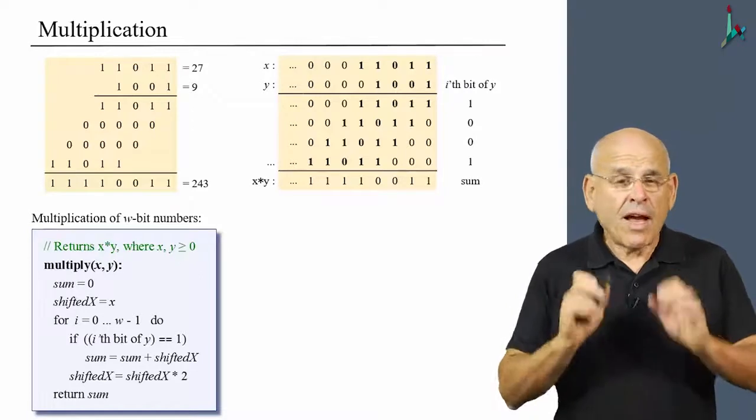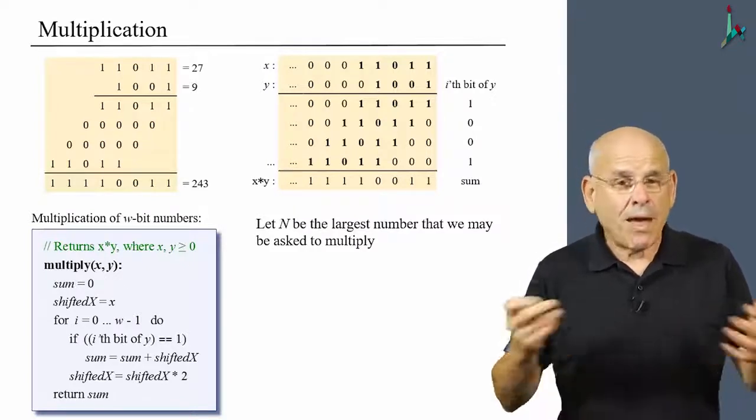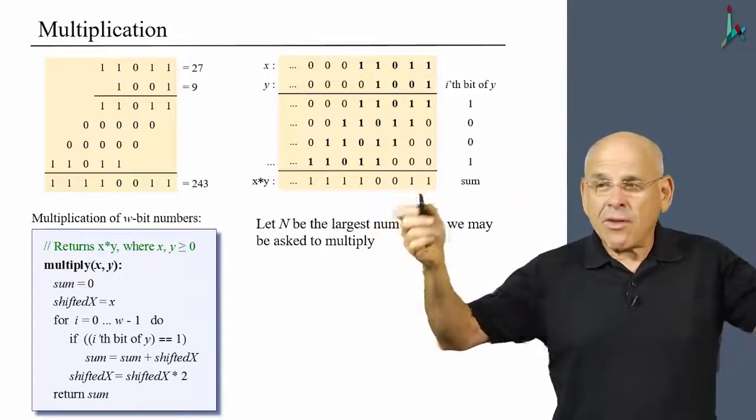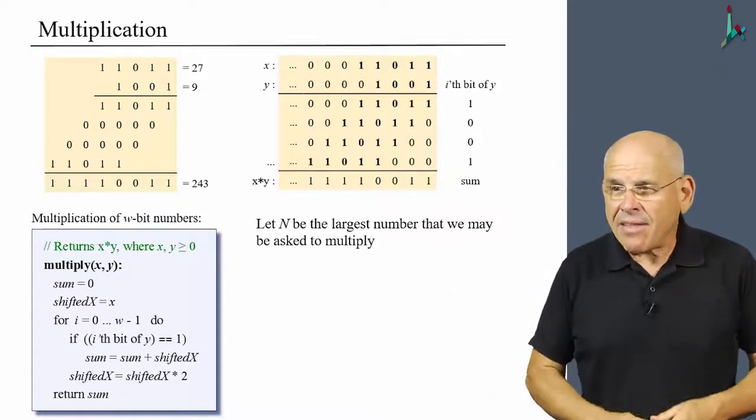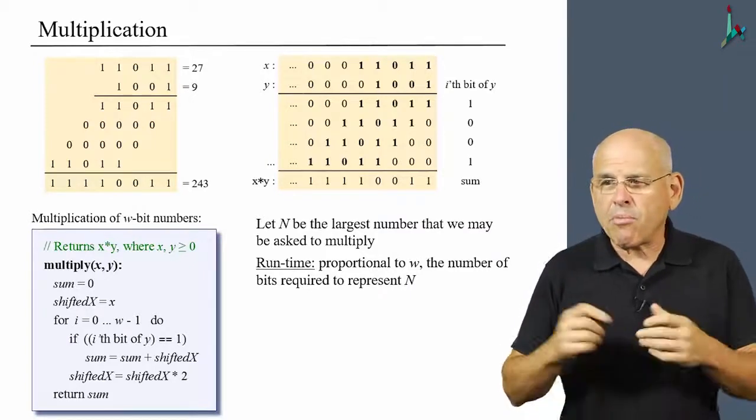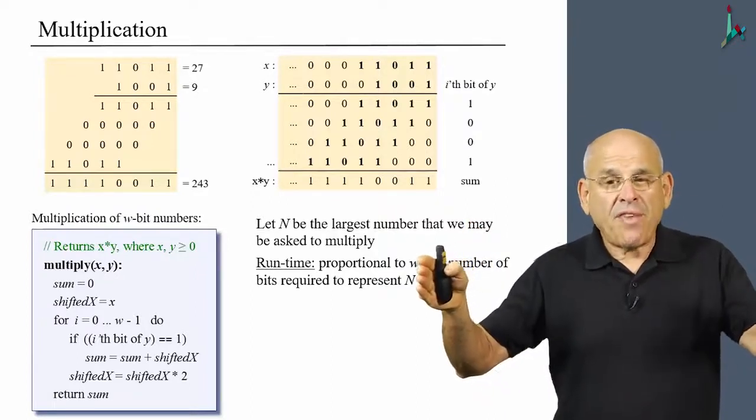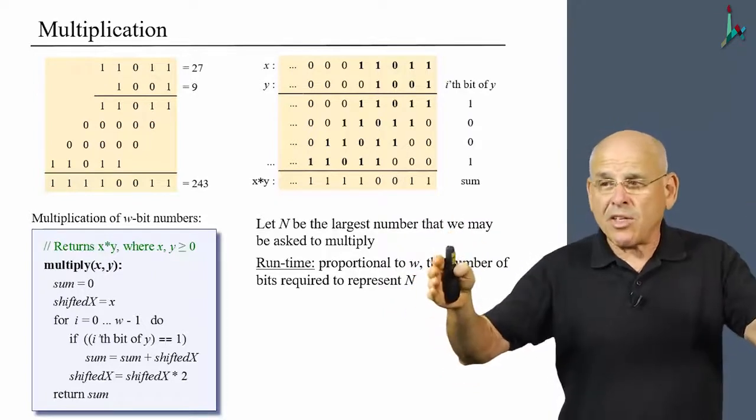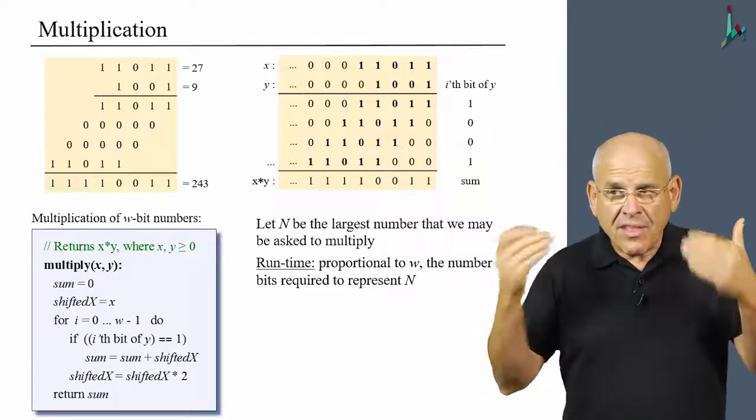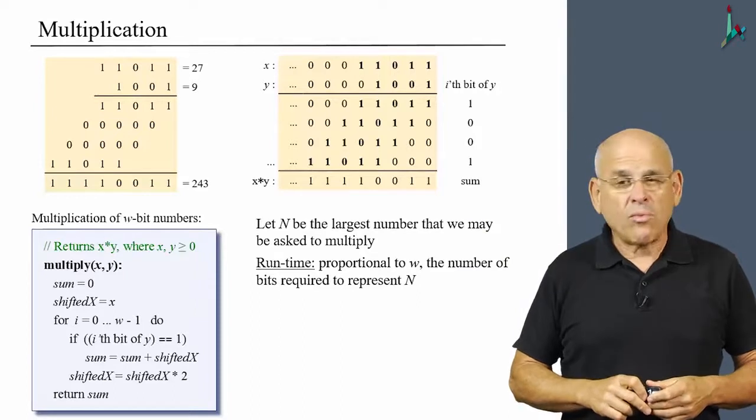All right, now there are some very nice properties of this algorithm. Once again, let us assume that n is the largest number that we may be asked to multiply. It may be a million, a billion, a trillion, whatever is the number that you can represent given w bits. And yet, irrespective of the magnitude of this number, the runtime of this algorithm is proportional not to n, but rather to w. To the number of bits which is fixed, right? Because we work with a fixed representation with either 16, 32, 64 bits and so on. And this constant, 16, 64 and so on is going to determine how long this algorithm is going to be, is going to perform.